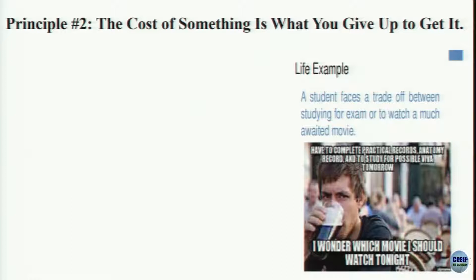This brings us to principle number two: the cost of something is what you give up to get it. If I give up leisure, there is an opportunity cost; if I give up work, there is an opportunity cost. For example, a student faces a trade-off between studying for exams versus watching a movie. All decisions require comparing the costs and benefits of different alternatives.